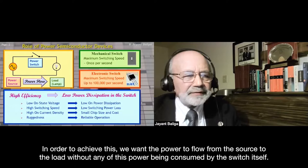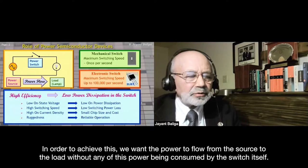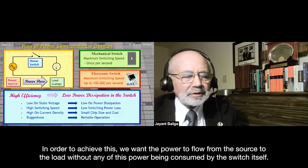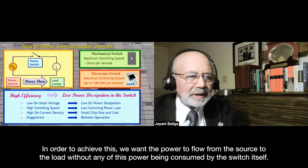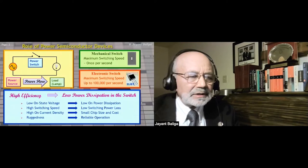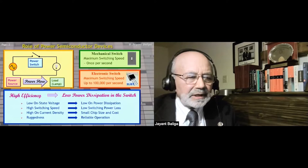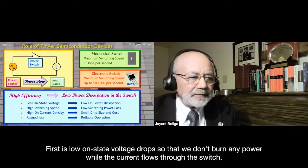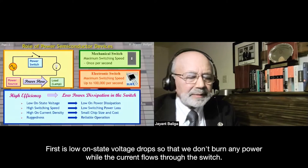In order to achieve this, we want the power to flow from the source to the load without any being consumed by the switch itself — that is how we get high efficiency. The power switch has to have certain properties: first is low on-state voltage drop, so that we don't burn any power while current flows through the switch.